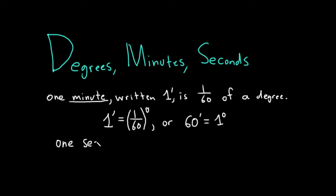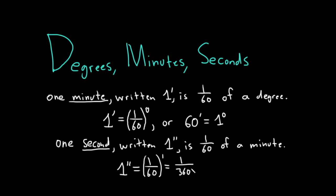And then 1 second is written in a very similar way. It's a one with two little primes like this. So this is 1/60th of a minute. So you could say that 1 second is equal to 1/60th of a minute, which is equal to 1/3600th of a degree.